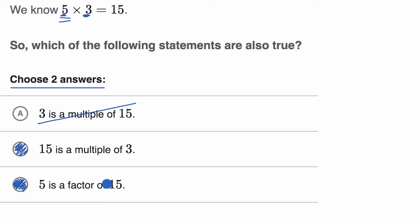It would have also been true if they said three is a factor of 15, or if they said 15 is a multiple of five. Any of those would have been true statements based on what we know, that five times three is equal to 15.